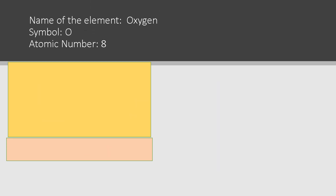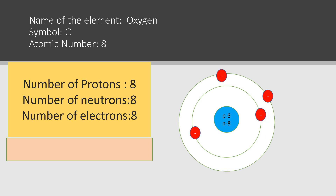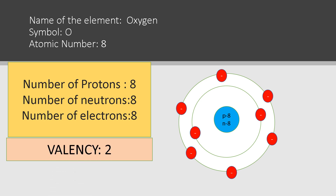The valency of oxygen is two. Atomic number eight, protons eight, neutrons eight, and electrons eight. The electronic configuration of oxygen is 2, 6. It accepts two electrons to achieve eight electrons in its outermost shell, completing the octet and becoming stable. Hence the valency of oxygen is two.